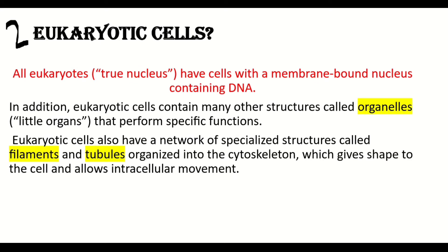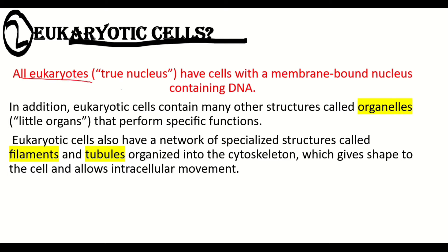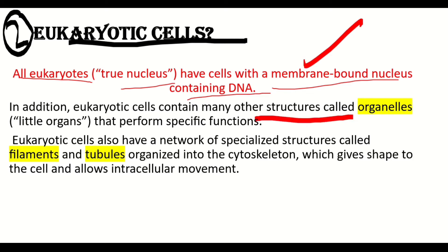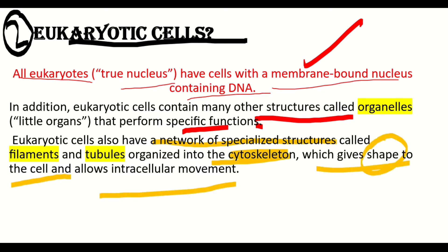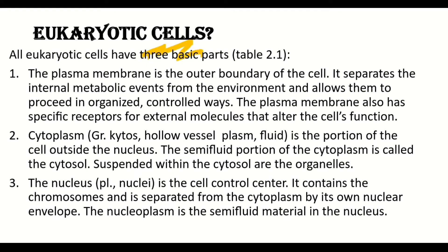Now, what are eukaryotic cells? Eukaryote — meaning 'true nucleus' — have cells with a membrane-bound nucleus containing DNA. They have membrane-bound organelles and their nucleus is also bounded by a membrane. In addition, eukaryotic cells contain many other structures called organelles — little organs that perform specific functions. Eukaryotic cells also have a network of specialized structures called filaments and tubules organized into the cytoskeleton, which gives shape and allows intracellular movement. All eukaryotic cells have three basic parts: the plasma membrane, the cytoplasm and the nucleus.